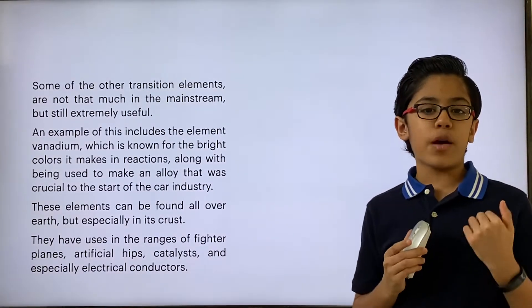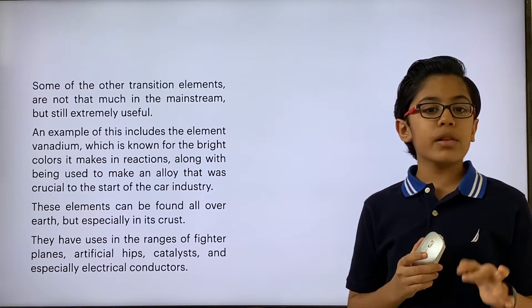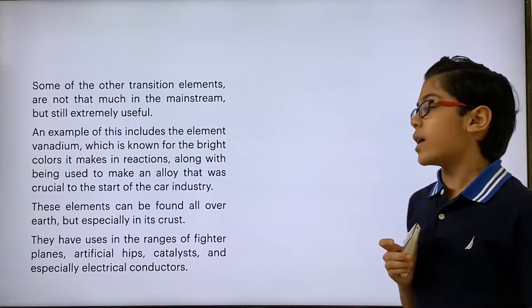These elements are usually found all over the Earth, but especially in the crust. An example of this is the element silicon, which is one of the most abundant elements in the Earth's crust.